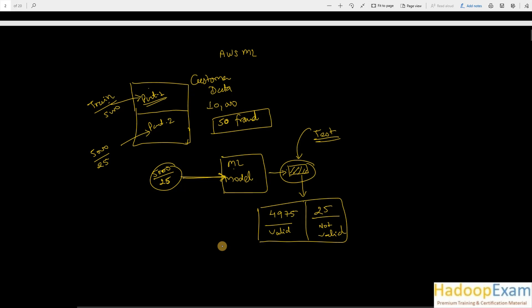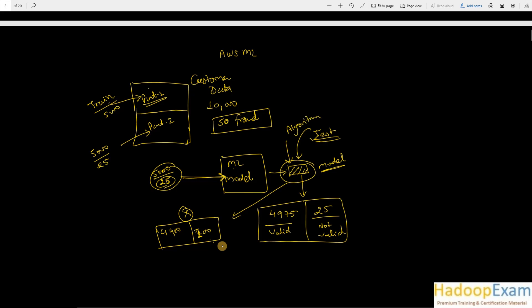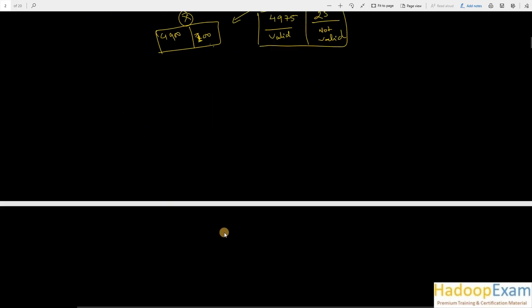Once trained, we can predict based on whatever we have trained, and if it correctly predicts, the model is correct. If the model is not predicting correctly - for example, it says 4,900 transactions are valid and 100 are fraud - then the model is not correct, because we know there are only 25 fraudulent transactions. So something is wrong in the model and we need to correct it. This is the very basics of machine learning - you use various algorithms to create this model.